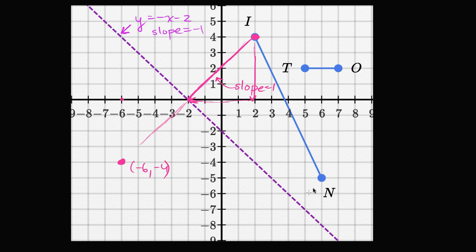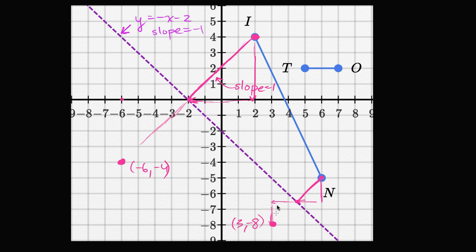Now let's do the same thing for point N. If we drop a perpendicular, it will have a slope of one, because the negative reciprocal of negative one is positive one. To go from point N to the line we go down one and a half and left one and a half. So we do the same on the other side — go left one and a half and down one and a half — and we get to the point X equals three, Y equals negative eight. We are now equidistant on the other side.